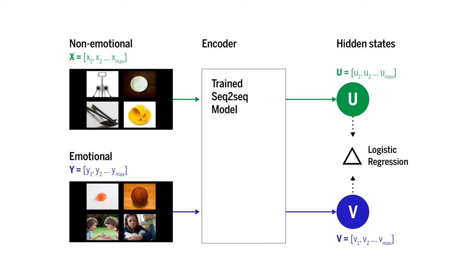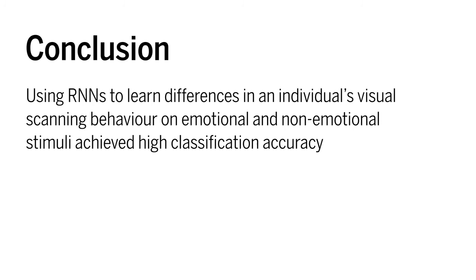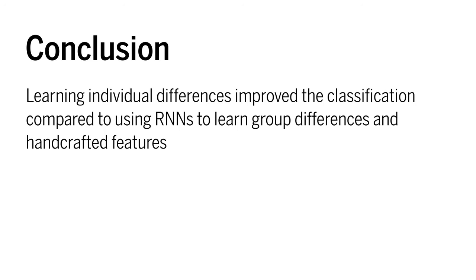Using recurrent neural networks to learn the differences in an individual's visual scanning behaviour on emotional and non-emotional stimuli, we achieved high classification accuracies with an AUC of 0.814. Learning the individual differences improved the classification accuracies compared to using recurrent neural networks to learn group differences and using handcrafted features.